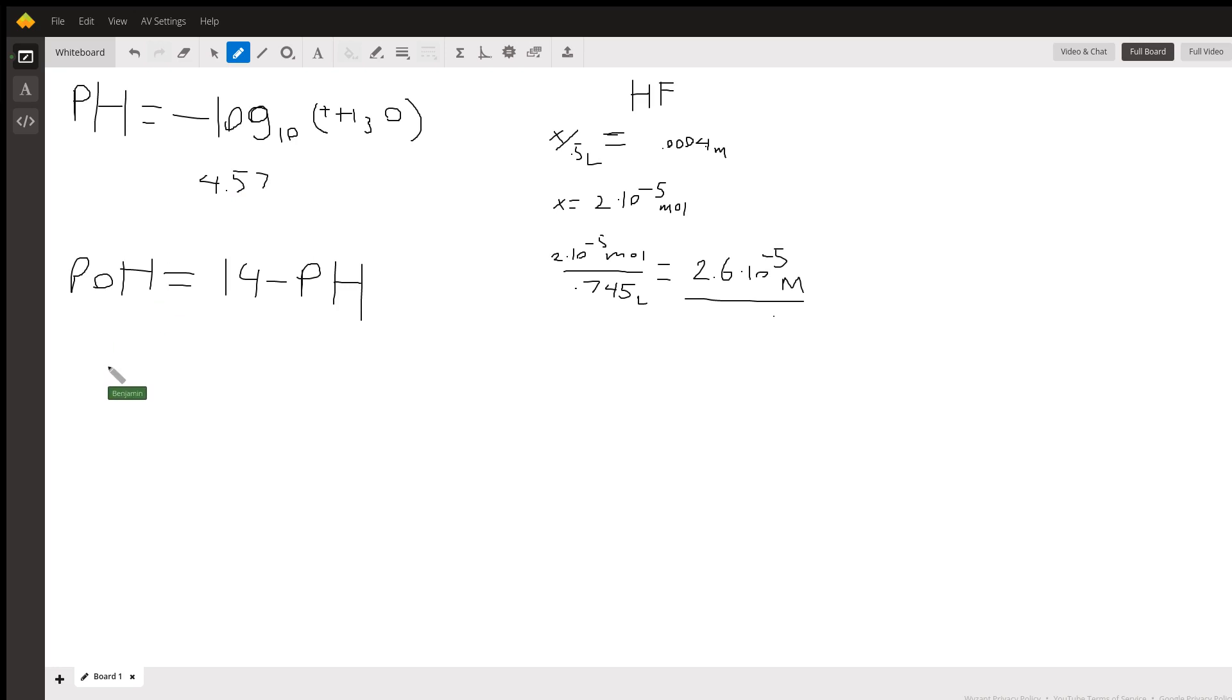Now, pOH, since this is on a scale of 14, is just 14 minus the pH, because pH plus pOH is equal to 14. So, solving for pOH, 14 minus that magic pH number is equal to 9.42.